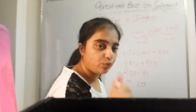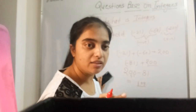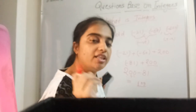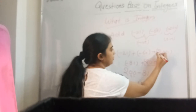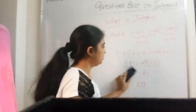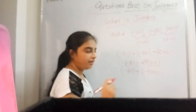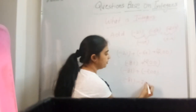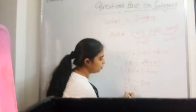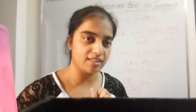Aur agar main isi question mein aap se poochhun — agar main 200 ko bhi minus ka le lun, teenon integers mein minus le lun, teenon integers negative le lun, to kya hoga? Yeh to ho gaya minus 81. Aage lagao 200 ke negative. Minus 81 plus minus 200 — plus minus always minus. So minus 81 plus minus 200 becomes minus 81 minus 200. Kya hoga? Minus 281 — dono ka addition — which is a negative integer.